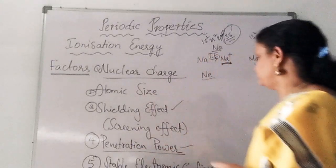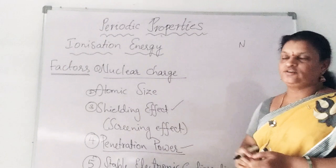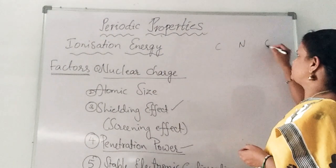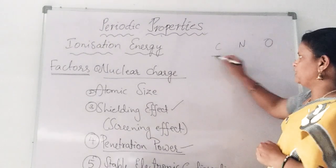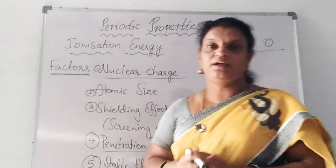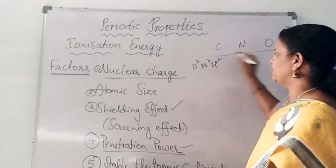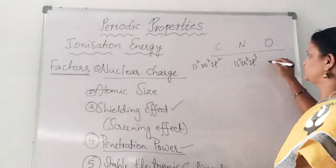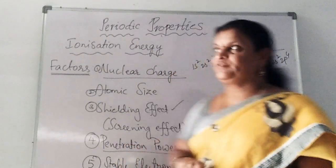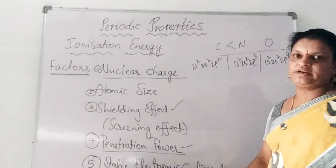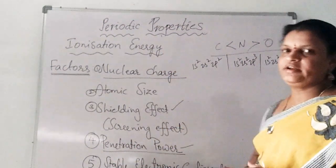Now let us compare carbon, nitrogen, and oxygen. Carbon (atomic number 6): 1s², 2s², 2p². Nitrogen (atomic number 7): 1s², 2s², 2p³. Oxygen (atomic number 8): 1s², 2s², 2p⁴. Nitrogen has a half-filled electronic configuration (2p³), so its ionization energy is the greatest among these three — greater than both carbon and oxygen — because the half-filled configuration provides stability.